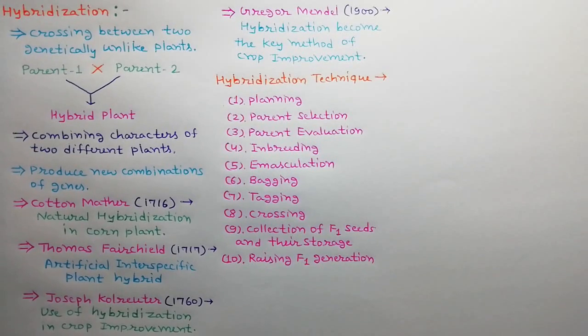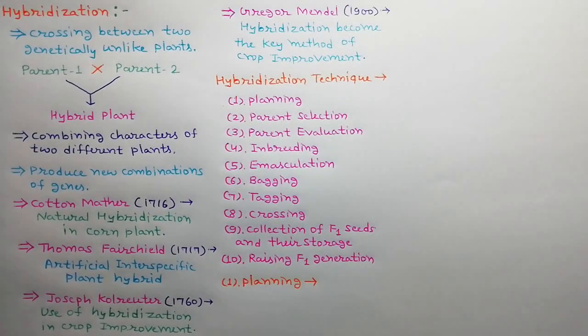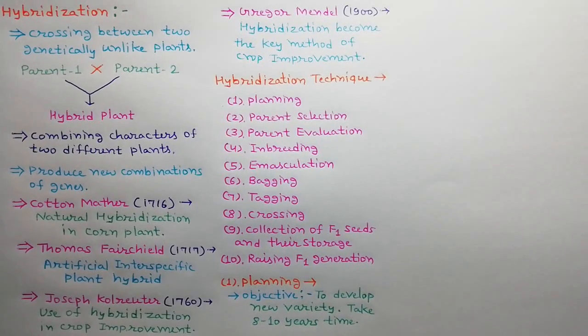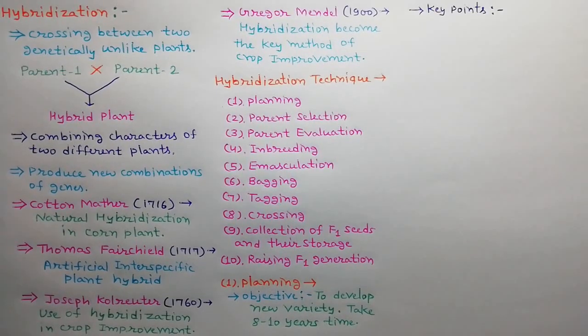The first step is planning. The main purpose of hybridization is to develop a new plant variety. This process takes 8 to 10 years. Plant breeder must ensure the following key points: